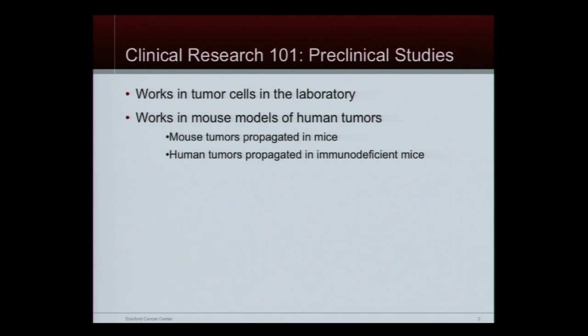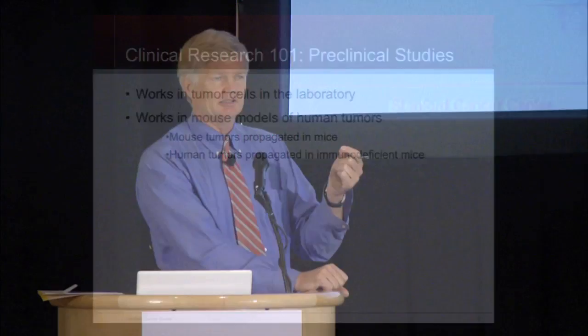That rationale usually involves having tumor cells grow in a Petri dish and showing that drug X, Y, and Z works better than drug A, B, and C. Then we say, let's go test X, Y, and Z in patients. Or better yet, having tumors grow in the sides of mice and demonstrating that those drugs work, and studying the molecular mechanisms of those drugs to then use in patients. The problem is, as Lauren alluded to, we don't have good mouse models — and that's a major problem for this field.